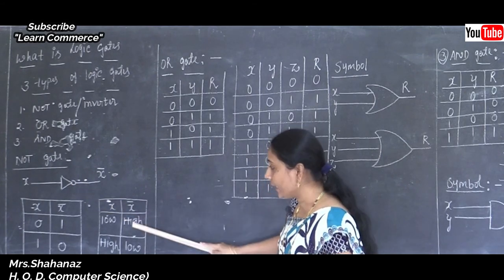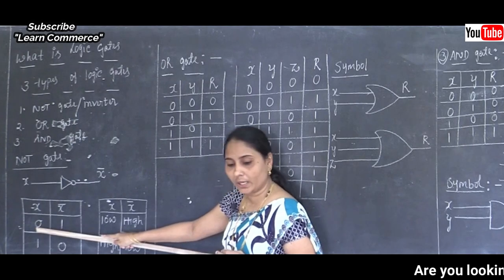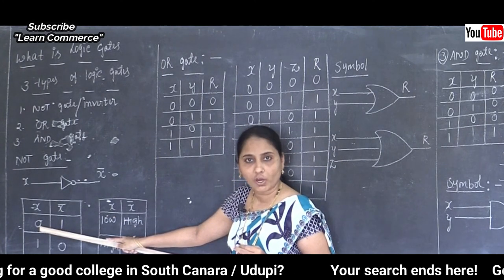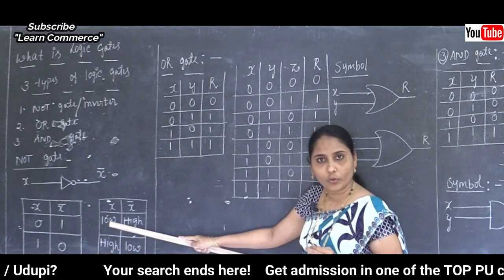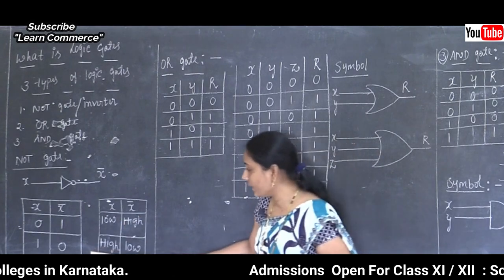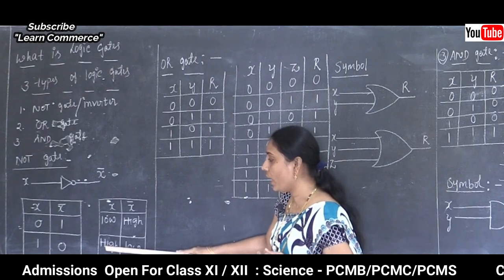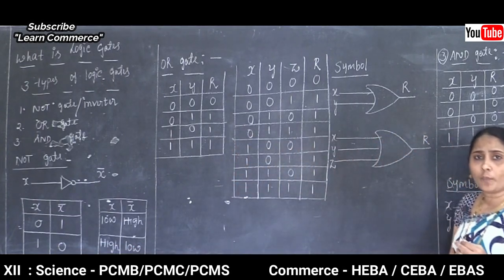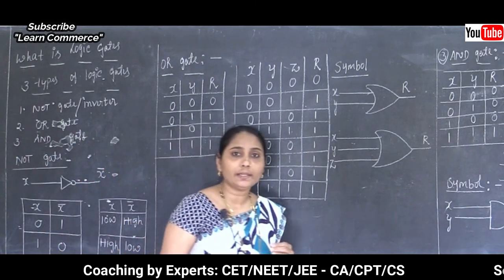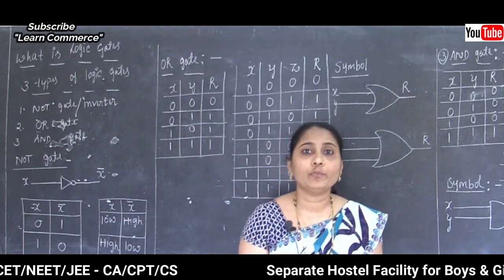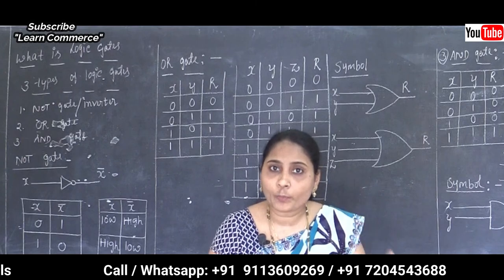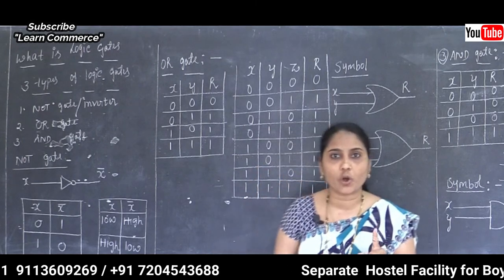In the second truth table format, 0 equals false or low value, and 1 equals true or high value. The NOT gate accepts only one input and produces only one output. The output state is always opposite of the input state.